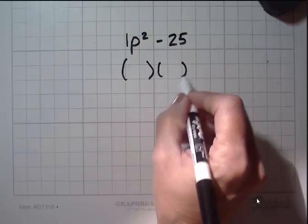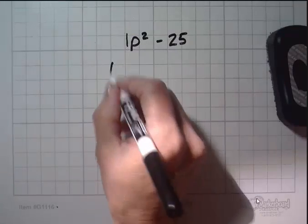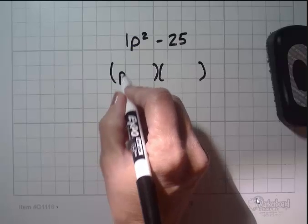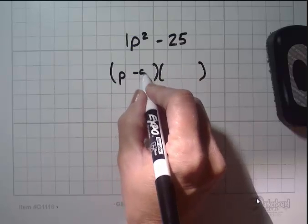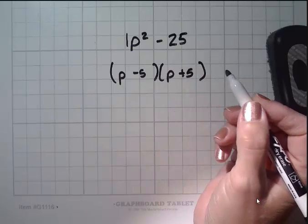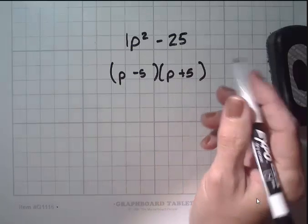So again, let me make a little more room. That was a little small. So again, square root of 1 is 1p minus 5 and 1p plus 5. And I factored it in like 3 seconds instead of it taking me 3 minutes.